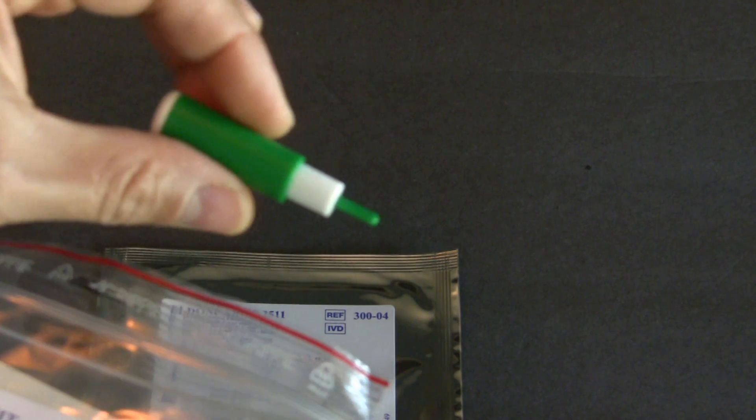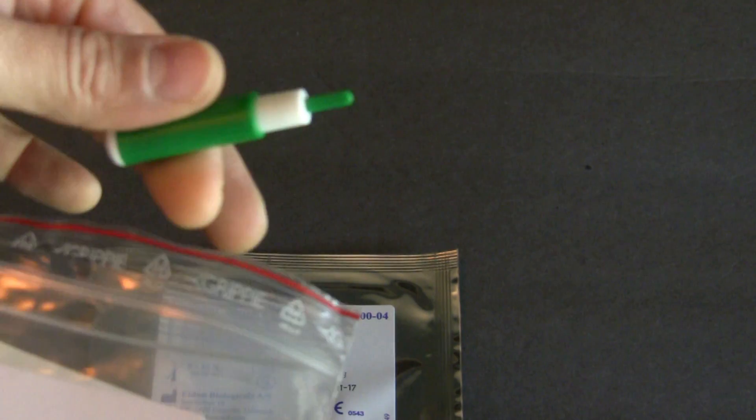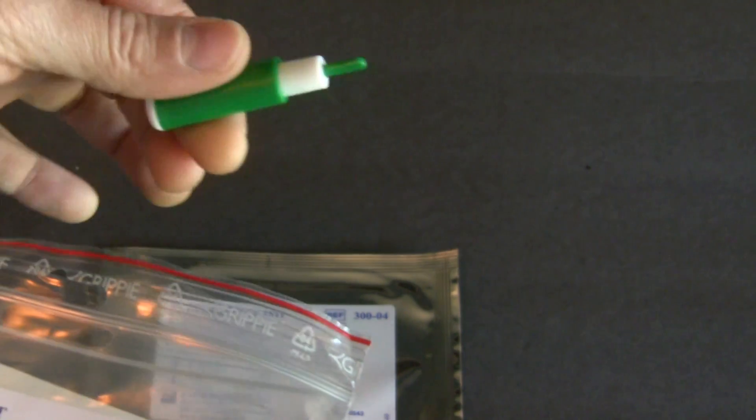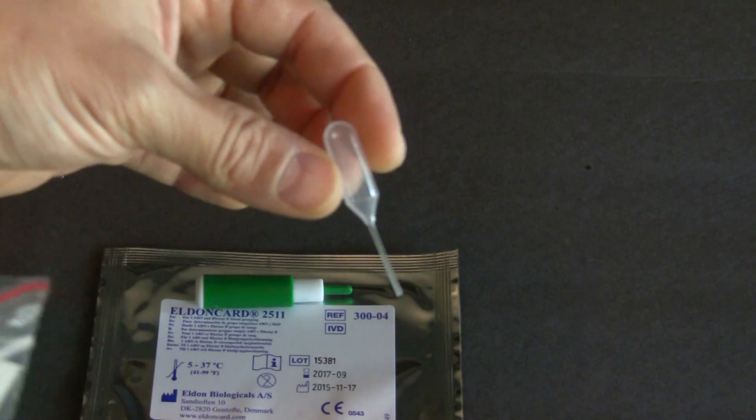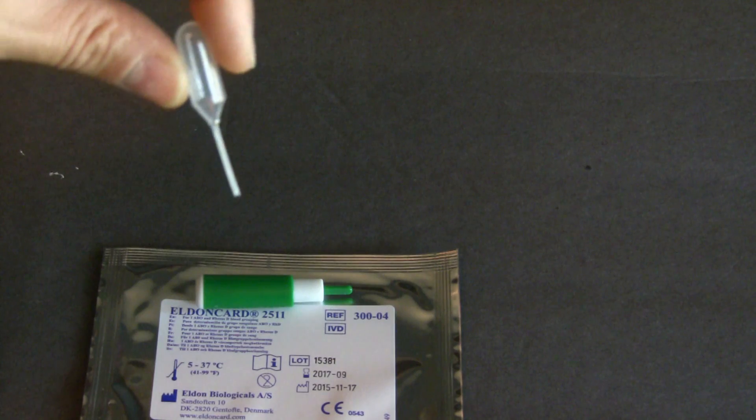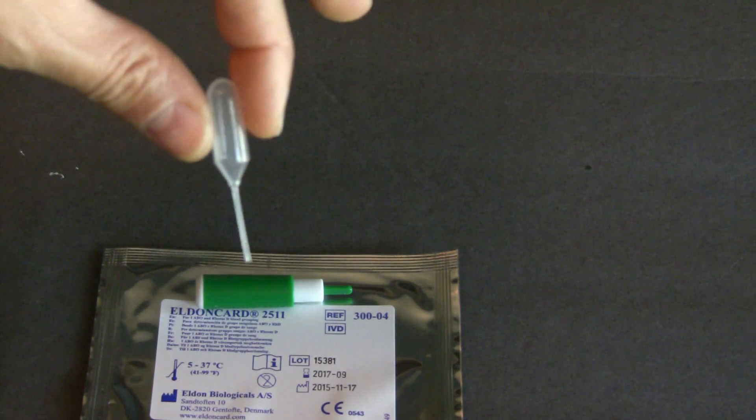Comes with the lancet, that's what you're going to prick your finger or your ear with. It also comes with this little pump, you're going to use this to drop water onto your Eldon card.